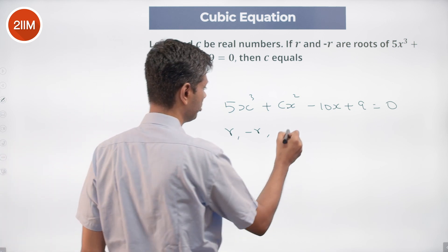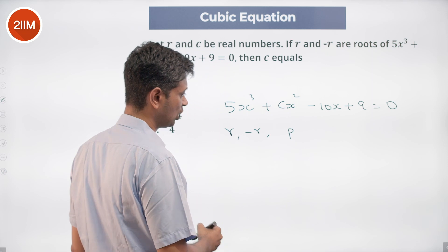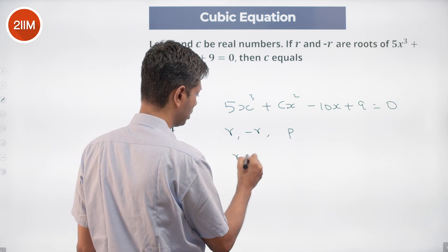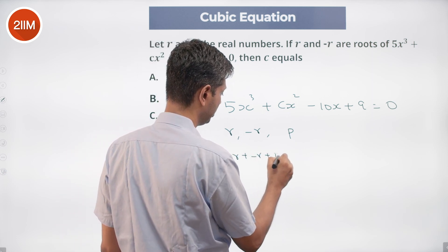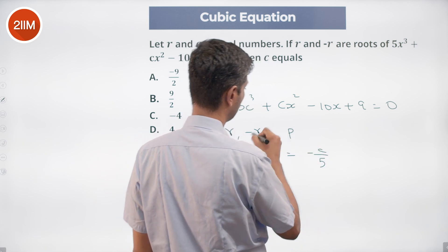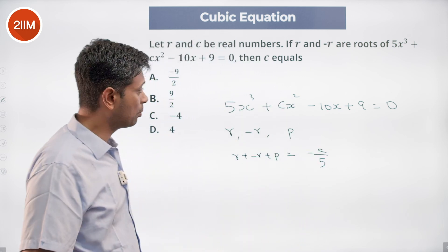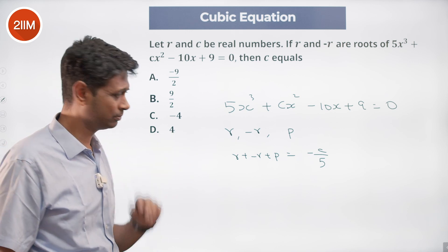Sum of the roots will be r + (-r) + p = -c/5. Product of the roots taken two at a time, which is r × (-r) + rp + (-r)p equals...